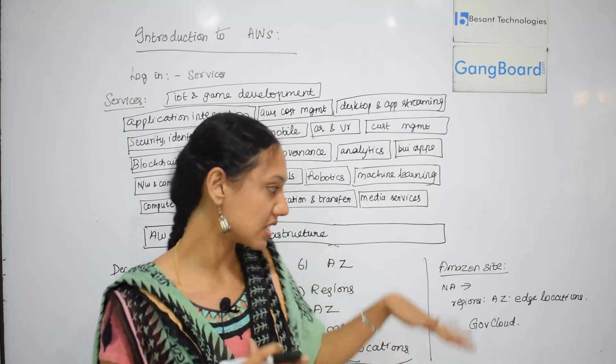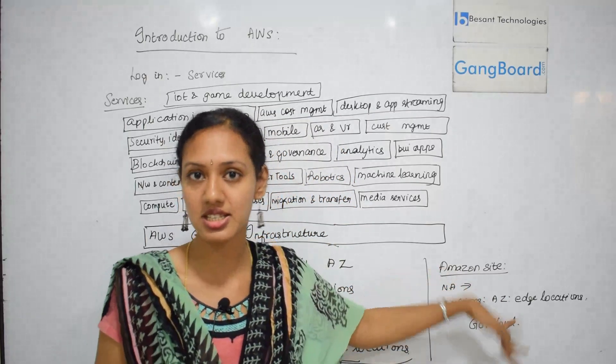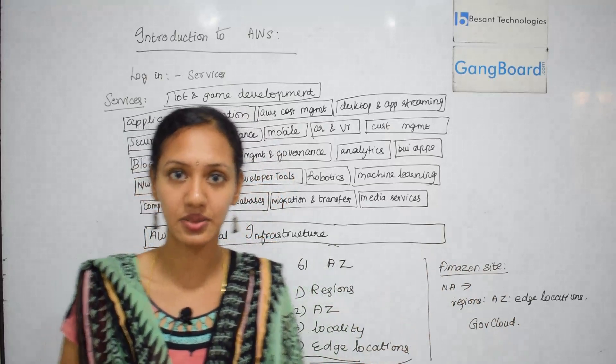So, region-wise, we can see continent-wise the different regions, edge locations, and the availability zones. Thank you.